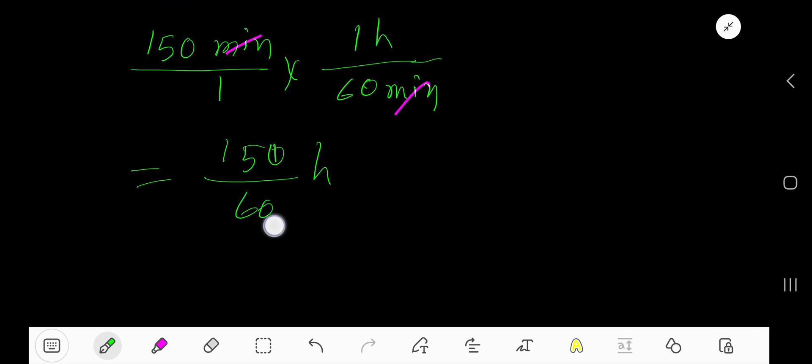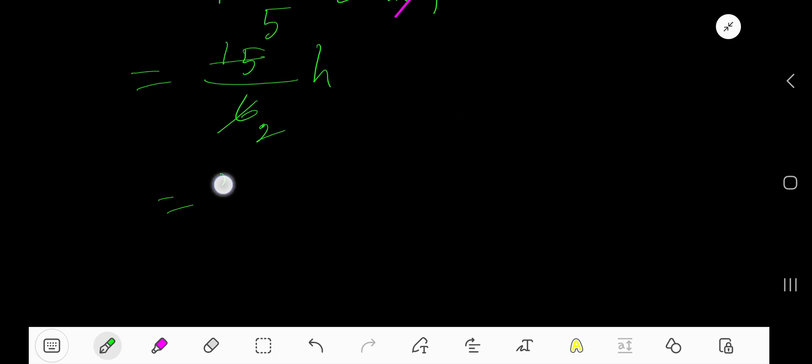Cancel the zeros. We are getting this. Now divide 6 by 3, you will get 2. Divide 15 by 3, you will get 5. So 5 over 2 hours.